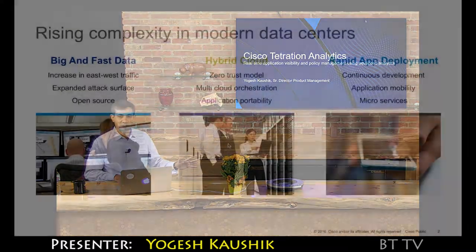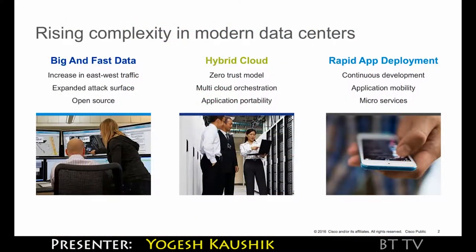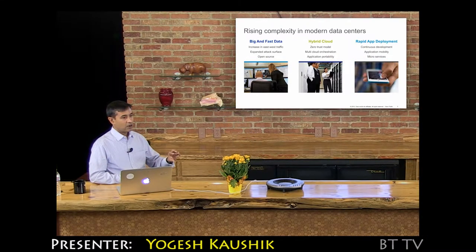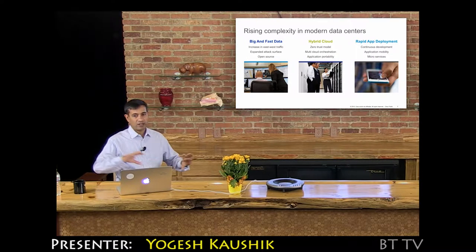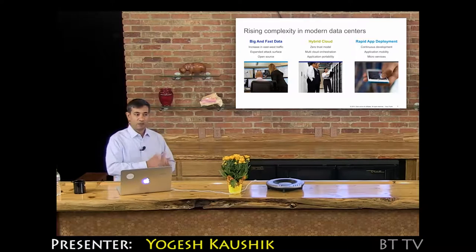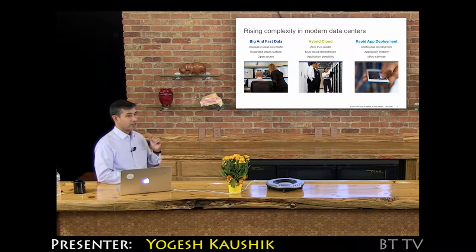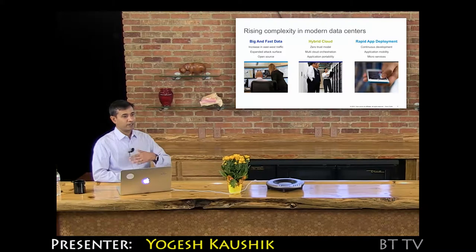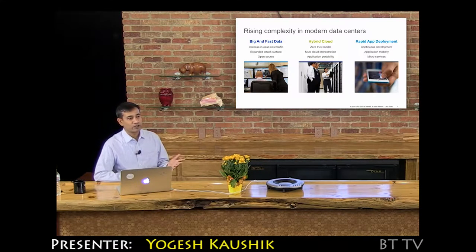The focus first and foremost is to provide complete visibility into all applications. Seventy to eighty percent of traffic never leaves the walls of the data center, yet all the security and monitoring sits at the perimeter — so nobody knows what's happening inside. And when you expand to hybrid cloud and move workloads to public cloud, you create pinholes in your perimeter, and you need to know which pinholes are necessary.